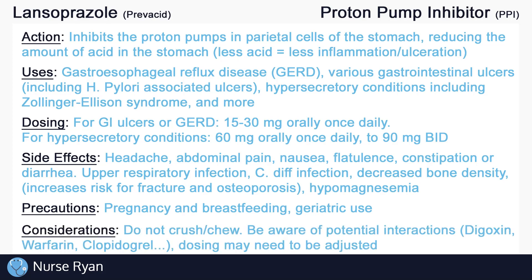It's very important not to crush or chew proton pump inhibitors, as they are often administered as enteric-coated capsules which require the medication to pass through the stomach and into the intestine where they can then be absorbed. If chewed or crushed, the medication will be rendered ineffective by the acid in the stomach. It's also important to be aware of some of the potential interactions with PPIs. PPIs may interact with drugs like digoxin, warfarin, clopidogrel, and many more, either by increasing or decreasing their effectiveness. Dosing of these drugs may need to be adjusted when taking PPIs.